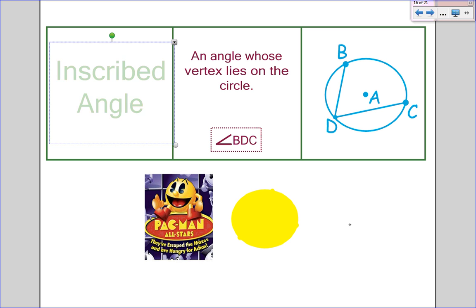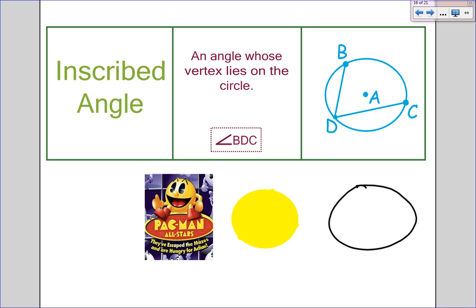And finally, we have inscribed angle. An inscribed angle is an angle whose vertex lies on the circle — not in the middle, not floating somewhere in the circle, but on the side. Here is an example where we have both a central angle and an inscribed angle. This would be the central angle right here, and this would be the inscribed angle right here.